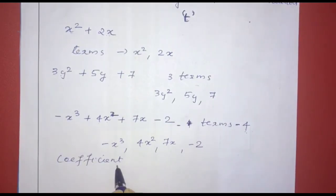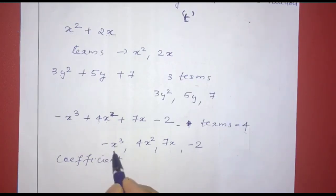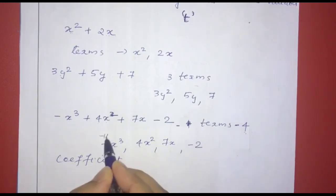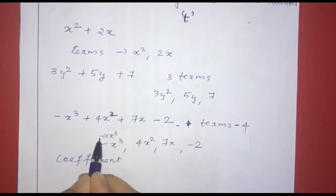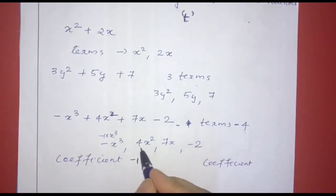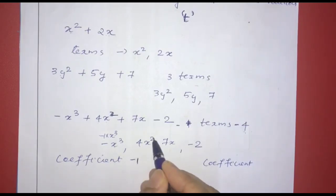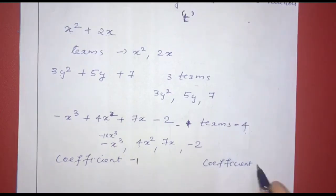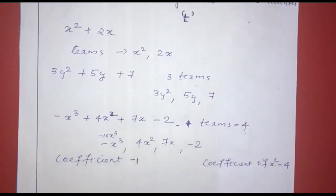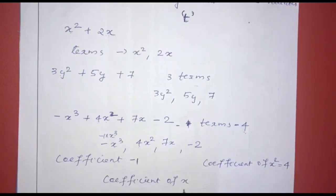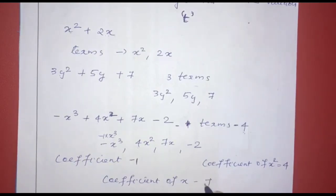Now we look at coefficients. What is the coefficient? In minus x raised to 3, x raised to 3 is the variable part, so the coefficient is minus 1, because minus x raised to 3 equals minus 1 into x raised to 3. In 4x squared, the coefficient of x squared is 4. In 7x, the variable part is x and the coefficient of x is 7.